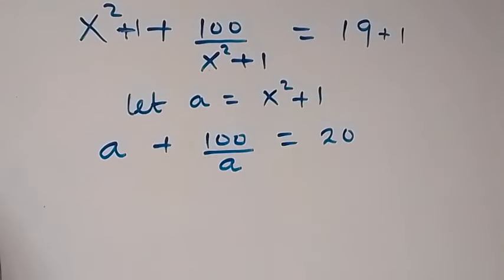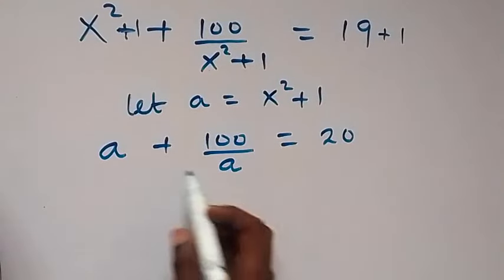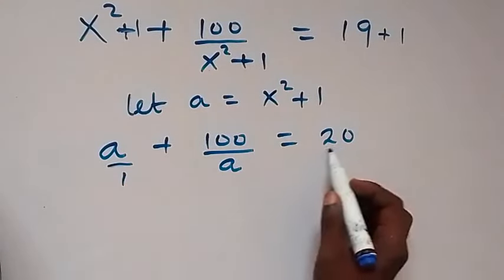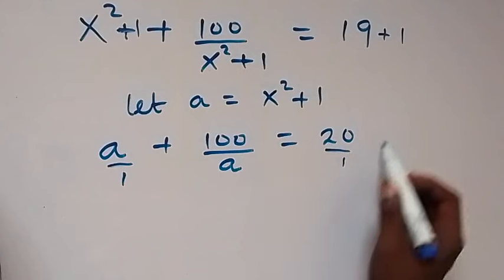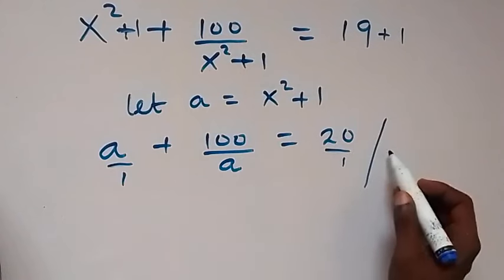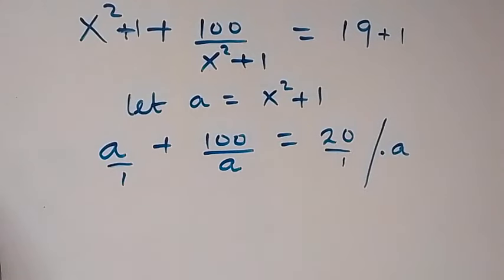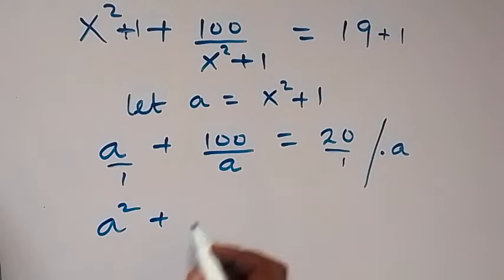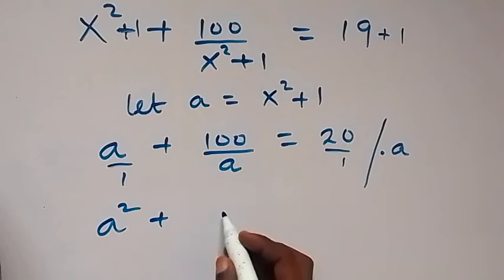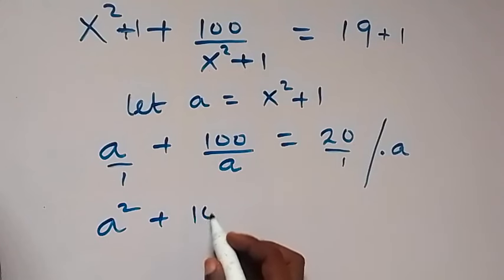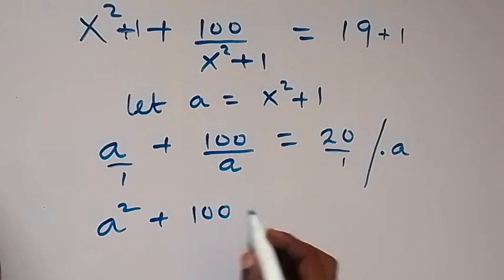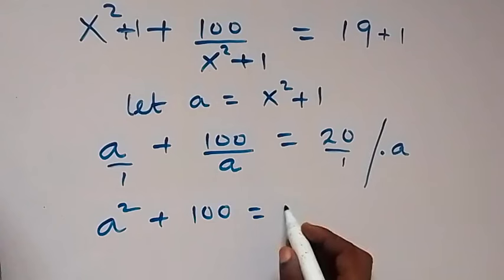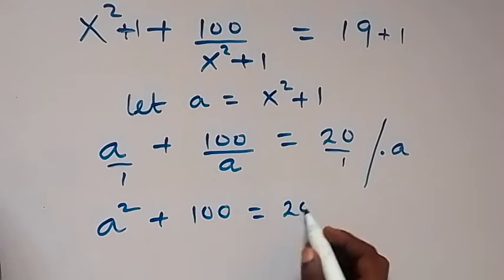In the next step we can clear this fraction with the LCM. The LCM here is a, and we multiply through by a. So a times a gives a squared, plus 100 over a times a gives 100, equals 20 times a, which is 20a.